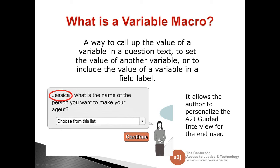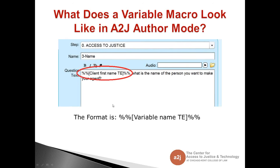By using the end user's name or other personal information, it draws them further into the interview. Here I've included the end user's name that they entered, and then I ask the question I want to find out. So what does it look like in A to J Author mode? Here we are in A to J Author mode in the Question tab.